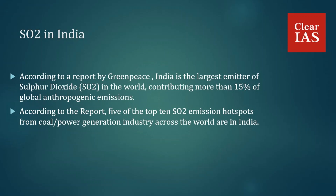The major sulfur dioxide emission hotspots in India are Singrauli in Madhya Pradesh, Neyveli and Chennai in Tamil Nadu, Talcher in Odisha, Korba in Chhattisgarh, Kutch in Gujarat, Ramagundam in Telangana, and Koradi in Maharashtra. These are the emission hotspots as detected by the NASA Ozone Monitoring Instrument satellite.